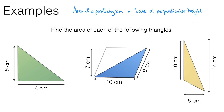So the area of this parallelogram is 10 centimetres multiplied by seven centimetres, which gives us 70 centimetres squared. And the triangle is going to be half of that, which is 35 centimetres squared. We can use this observation that a triangle is half of a parallelogram to write a formula for the area of a triangle. We get that the area of a triangle equals the base multiplied by the perpendicular height, divided by two.